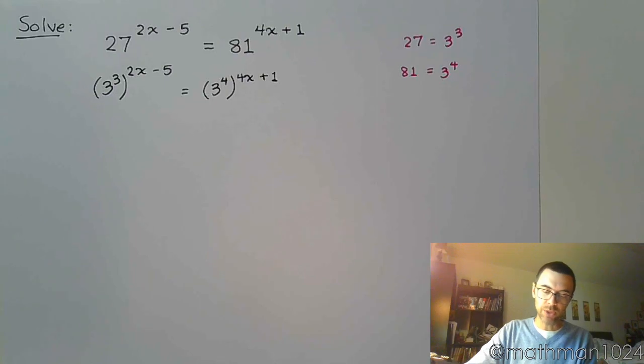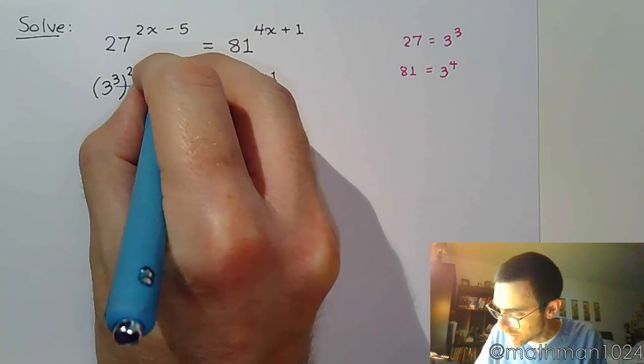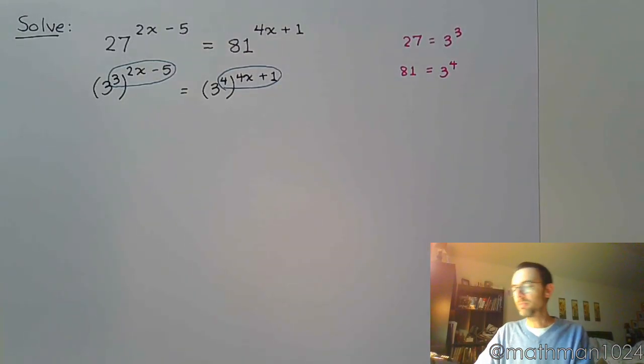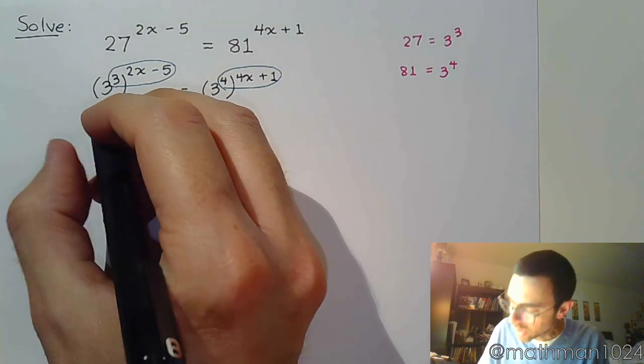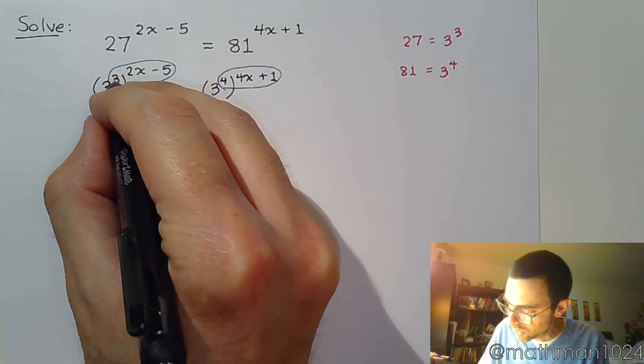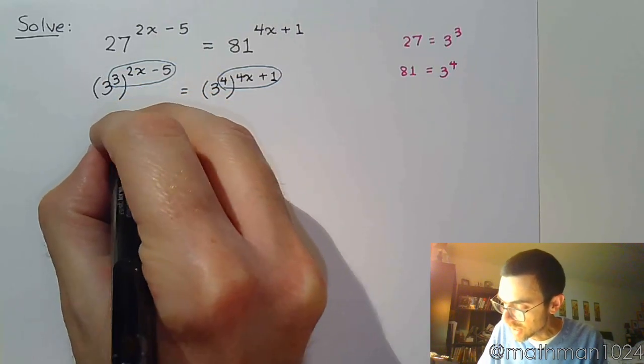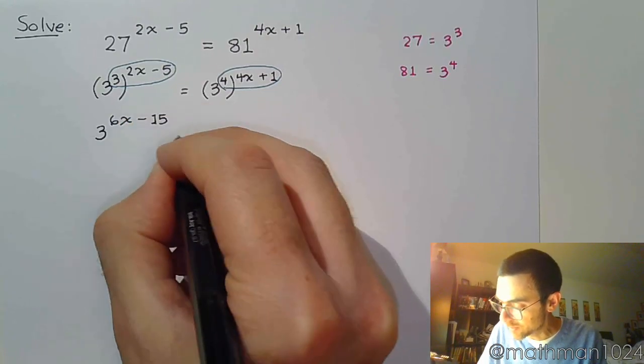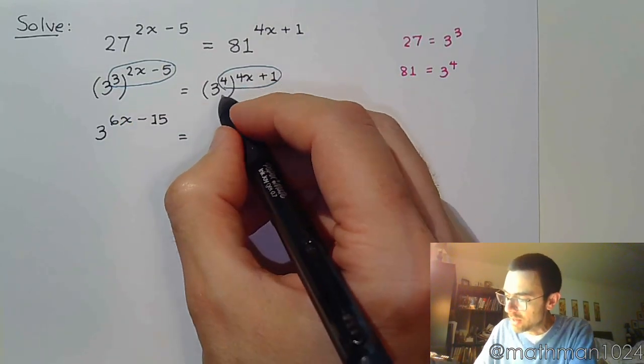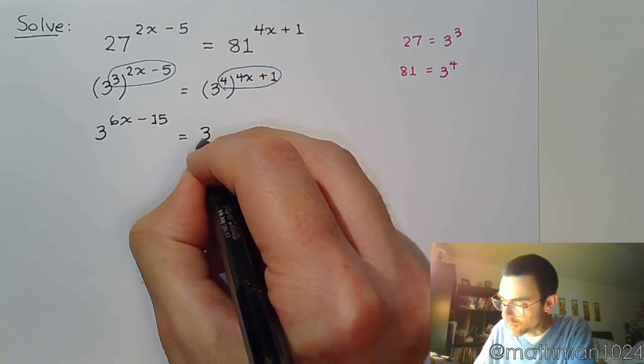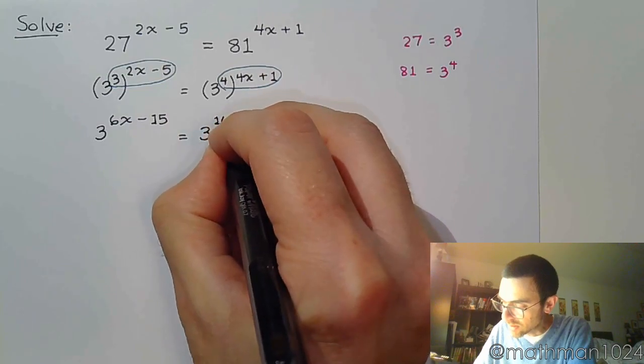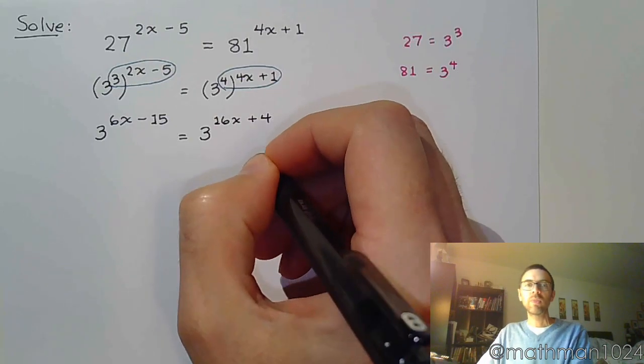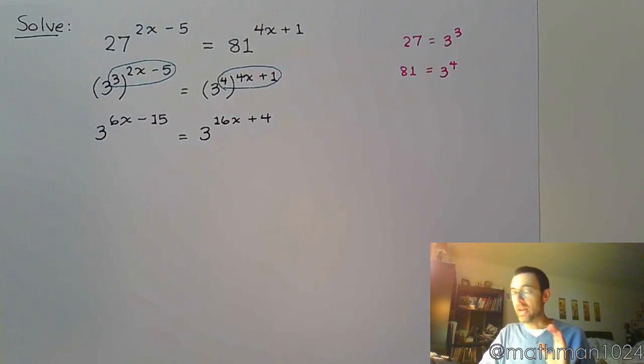All right, so again, powers to powers, no surprise here. The thing that you have to watch out for is to make sure that you distribute correctly. Make sure you multiply correctly. So, I'm going to have 3 raised to the, now, distribute. 3 times 2x is 6x. 3 times negative 5 is negative 15. On the right side, we have 4 times 4x, so that's a base of 3. 4 times 4x is 16x. And 4 times 1 is 4.